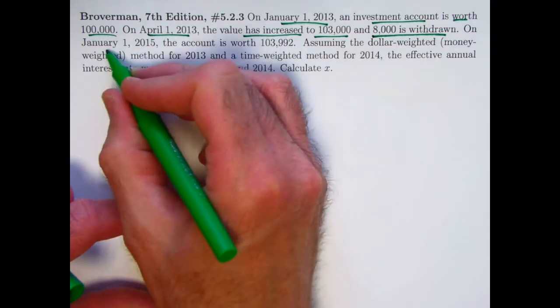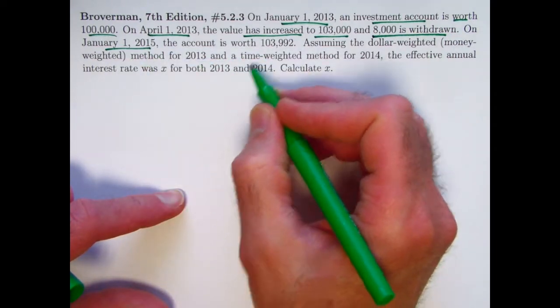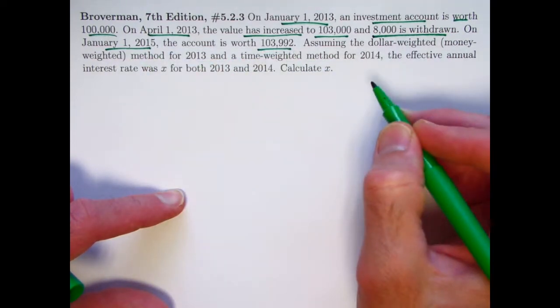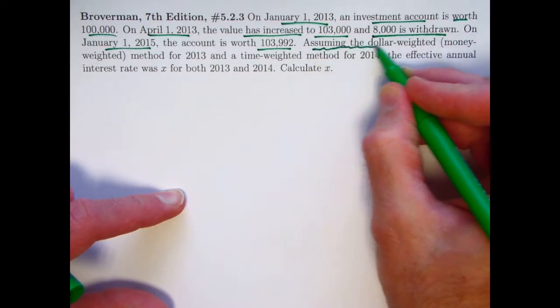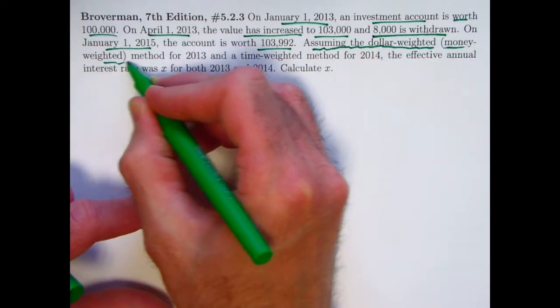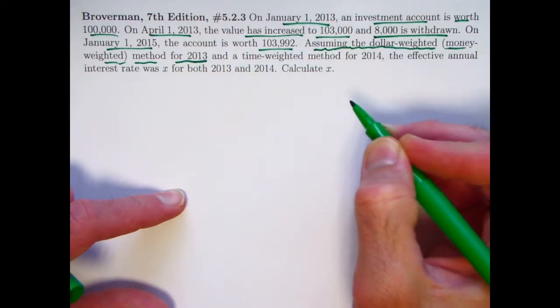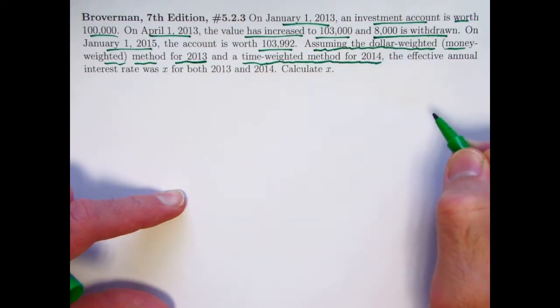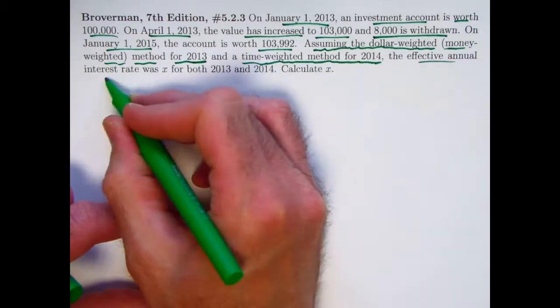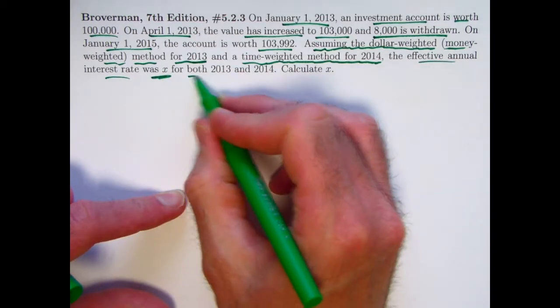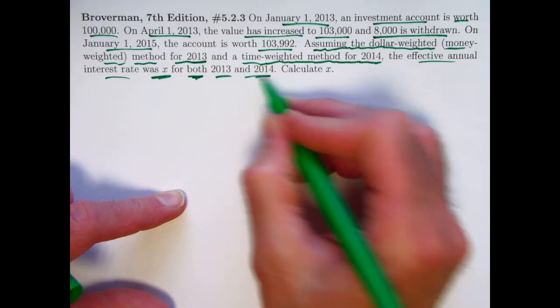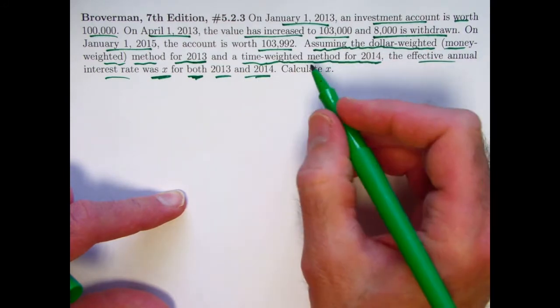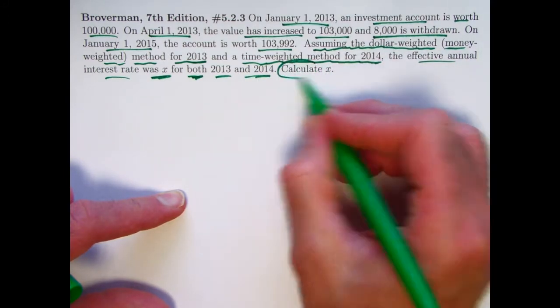Two years after the start, January 1st, 2015, the account is worth $103,992. Assuming the dollar-weighted or money-weighted method for 2013 and a time-weighted method for 2014, the effective annual interest rate was X for both 2013 and 2014, but again thought of differently in each case. The goal of the problem is to calculate X.